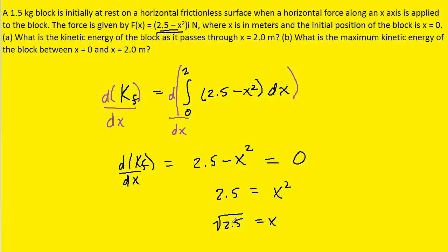Now the square root of 2.5 is approximately 1.58 meters, and that does indeed lie between 0 and 2. Now this is not the answer, of course. They didn't want to know the actual position when the kinetic energy is a maximum. They wanted to know the actual kinetic energy. So we actually need to back up and reevaluate the integral.